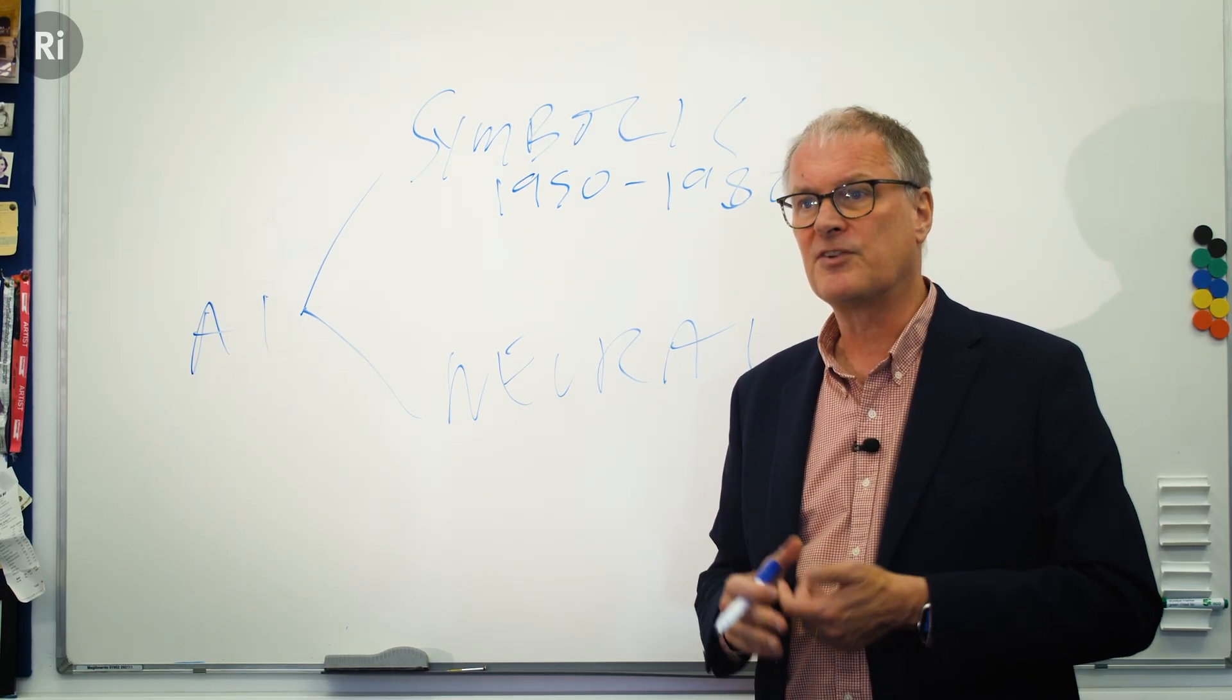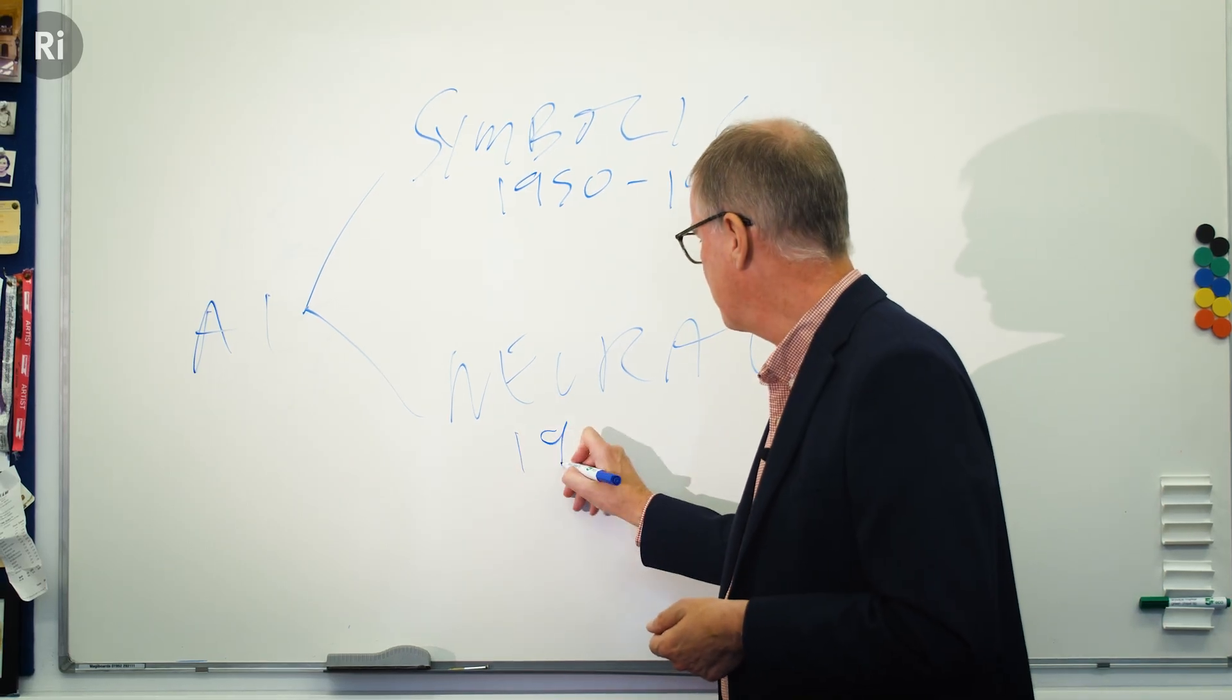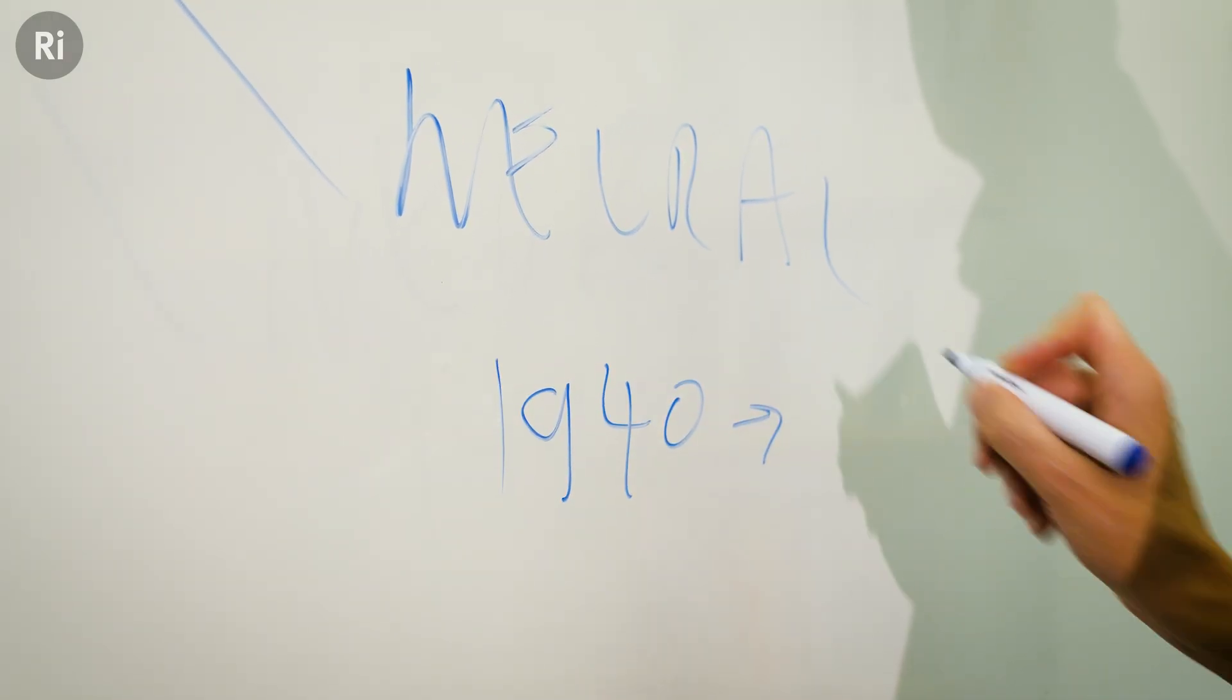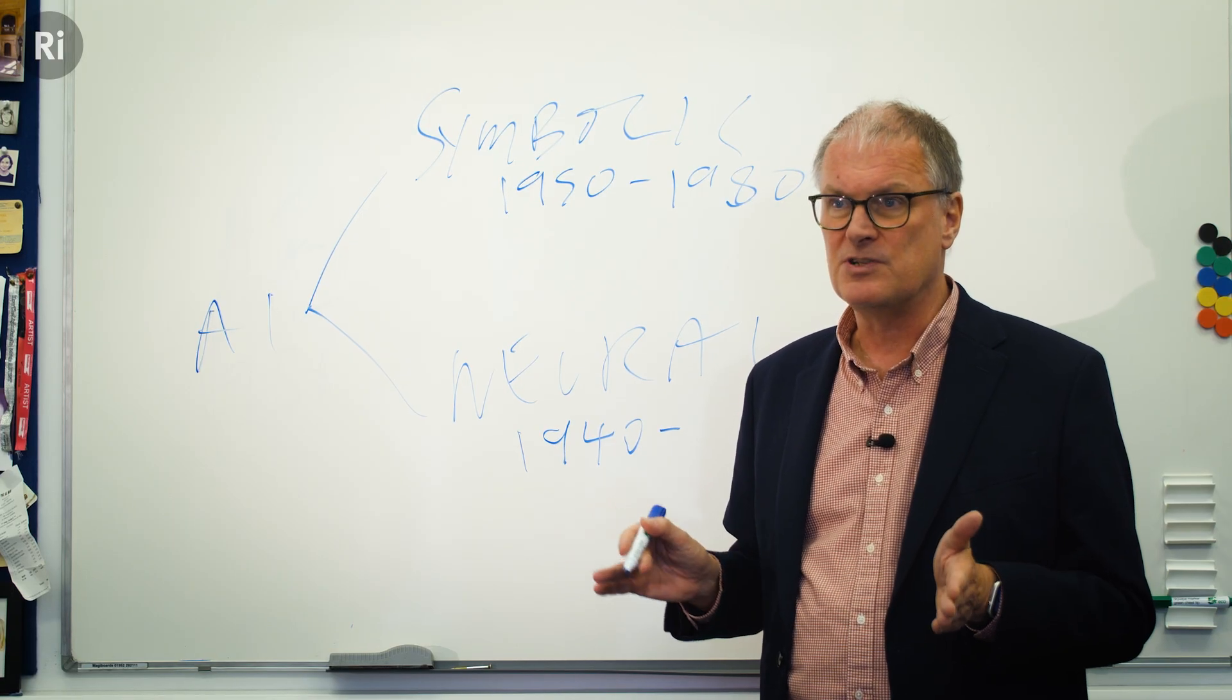The idea in neural networks is that we do the same thing in a computer. It goes back to the 1940s, but at the time, nobody had any idea how to actually build neural networks.